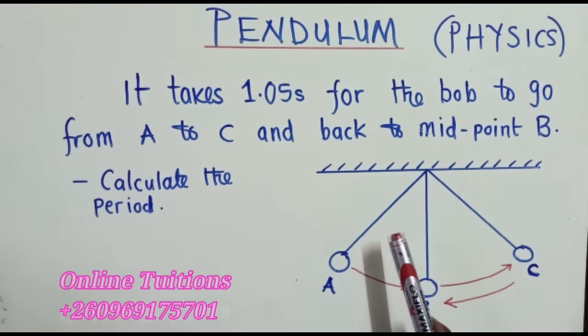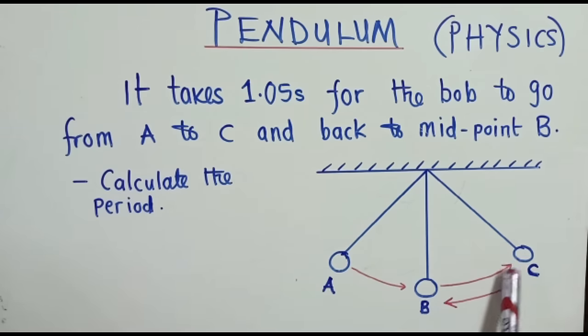So I've got this pendulum here and it's moving from A to C and then back to B. It's not reaching A. So it's from A to B, B to C, C to B. So now we need to calculate the period. How do we calculate this period?